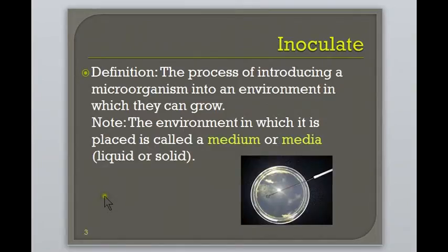The first step in cultivating microbes is to obtain a small sample known as an inoculum and to introduce it to a new environment which allows the microbe to grow. In the lab, we usually use a medium such as an agar plate or a broth tube to grow the microbe. This process is known as inoculation.